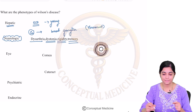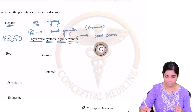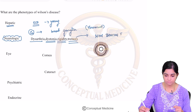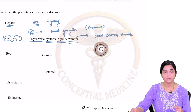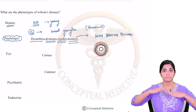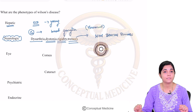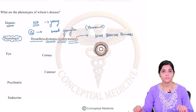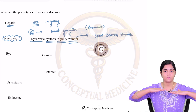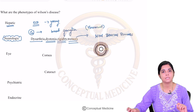The classical tremor seen in Wilson's disease is what we call as the wing-beating tremors. How do you examine for wing-beating tremors? You ask your patient to keep their hands up like this, and then they cannot maintain this posture — there is a wing-beating tremor.